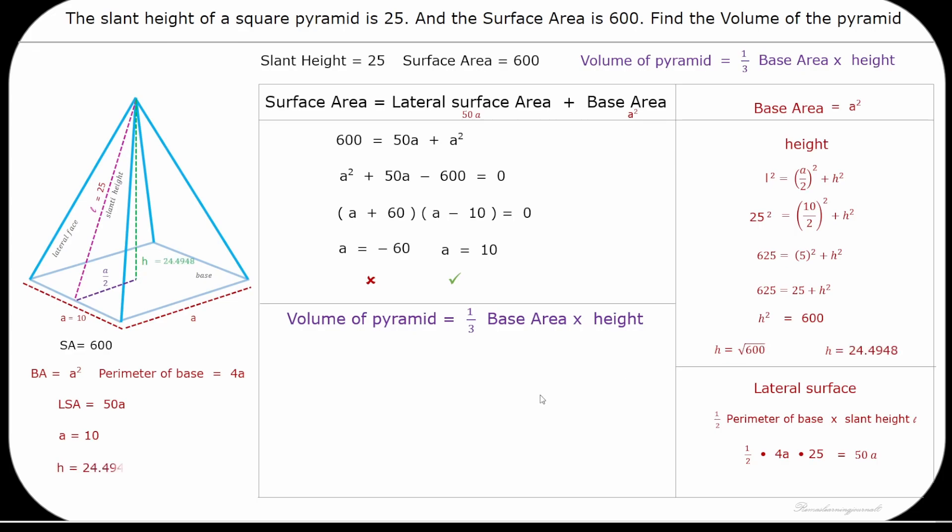Now let's substitute the base area and height into the formula for the volume. And the volume of the pyramid is 816.497.